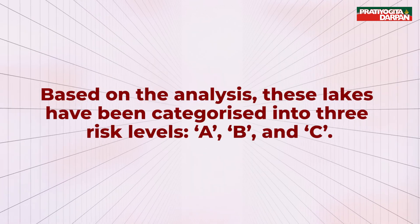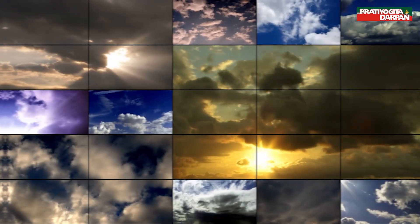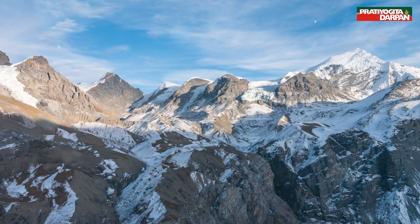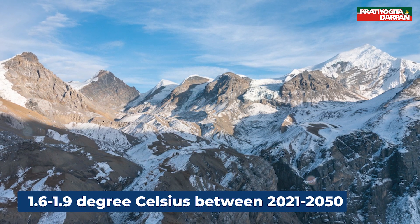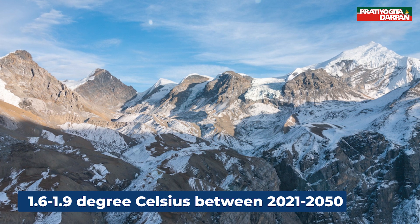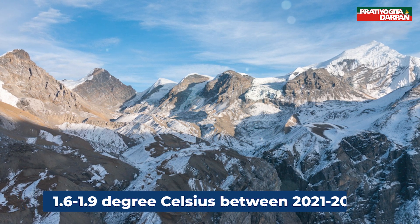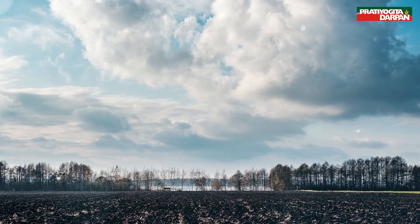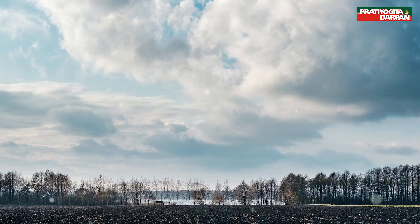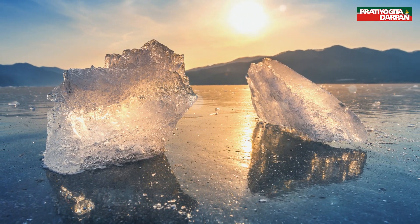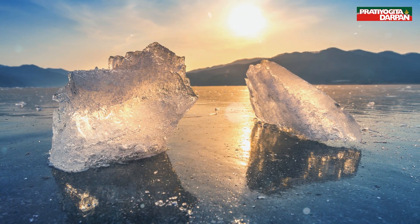Based on analysis, these 13 lakes have been categorized into three risk levels: A, B and C. Rising temperatures due to global warming could worsen the situation — Uttarakhand's annual average maximum temperature may increase by 1.6 to 1.9 degrees Celsius between 2021 and 2050. A 2021 study jointly conducted by Germany-based PIK and the Energy and Resources Institute found that this rise in temperature could heighten the risk of GLOF in Uttarakhand.